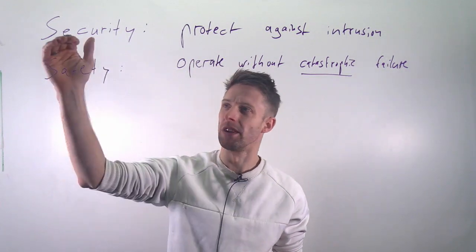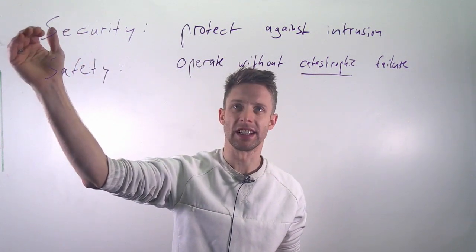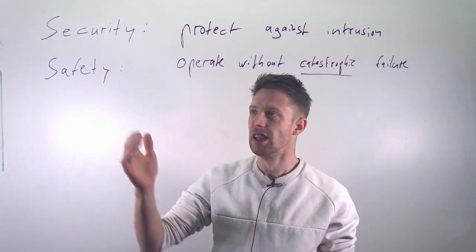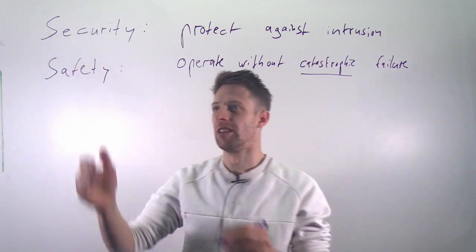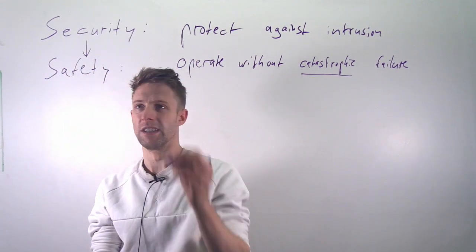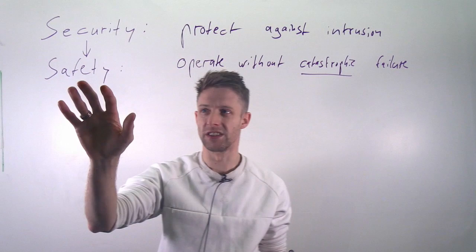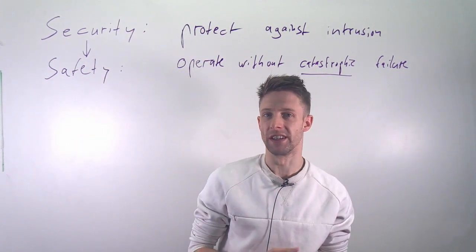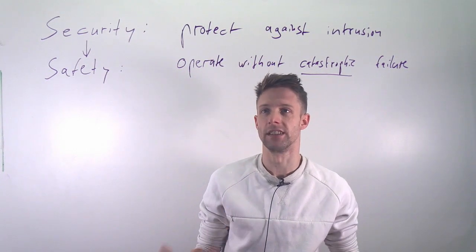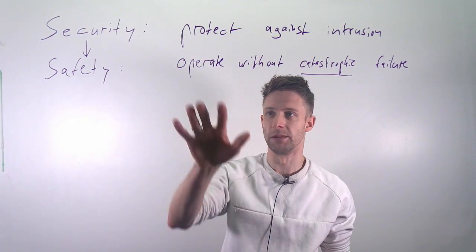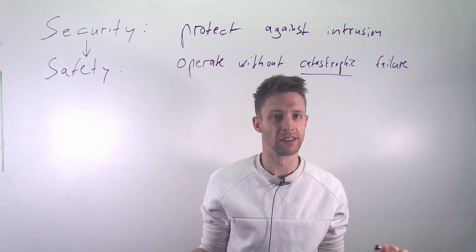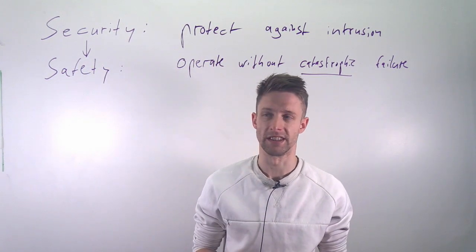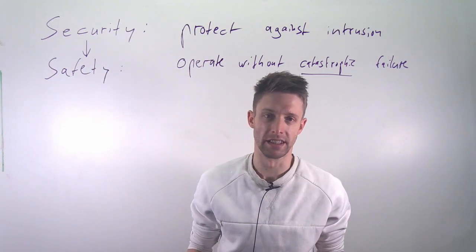So this is the distinction, and we will in general focus on the security aspect — how do we protect our systems against accidental or deliberate intrusion. It's important to note that without security you typically don't have safety, so if you have a safety-critical system which is insecure, there is typically no way to ensure that there is not a catastrophic failure. For example, if someone accidentally is able to intrude into the control system of a power plant, that could have catastrophic consequences — so security is a prerequisite for safety.